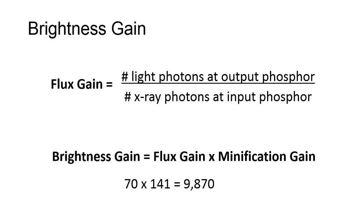Flux gain is also used to calculate total brightness gain. If you recall, flux gain was the ratio in the number of light photons at the output phosphor to the number of x-ray photons at the input phosphor. Your textbook gives us an example where a particular flux gain for an image intensifier is equal to 70.